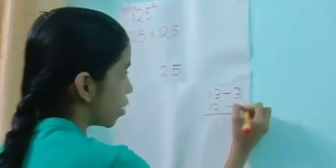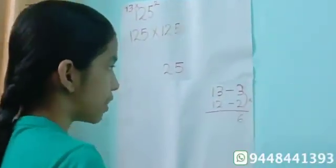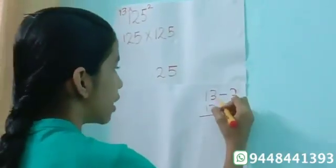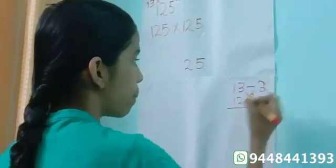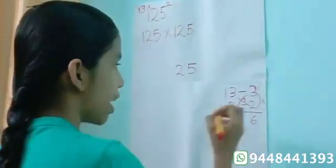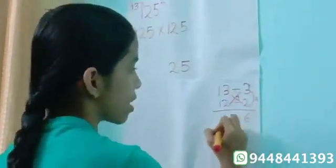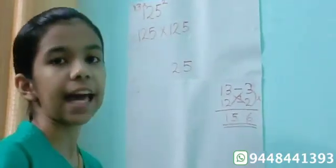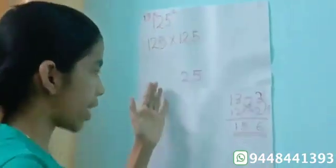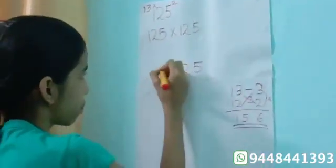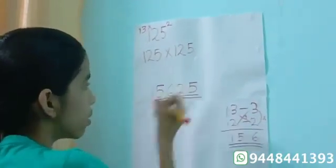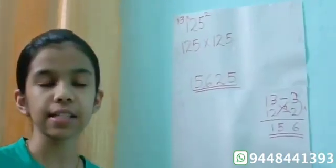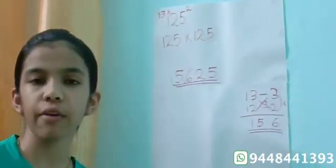Then we want to multiply 3 into 2, that is 6. Then we want to add 13 plus 2, that is 15. Then 12 plus 3, that is 15. Then 156 is the product of 13 and 12. So we can write here 156. So the final answer is 15625.